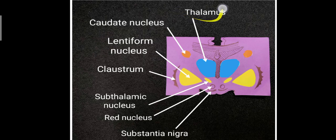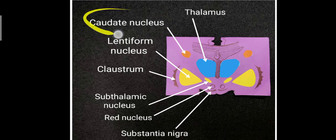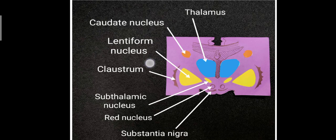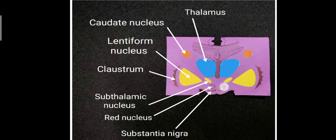Above the thalamus you can see the caudate nucleus, then the lentiform nucleus composed of putamen and globus pallidus. There is a thin layer of grey matter — the claustrum — then the subthalamic nucleus, the red nucleus and the substantia nigra. These are the structures you should know in relation to the thalamus.